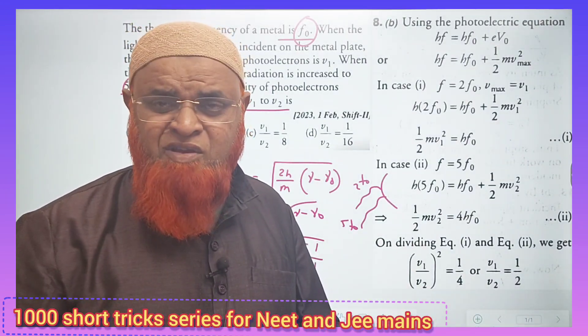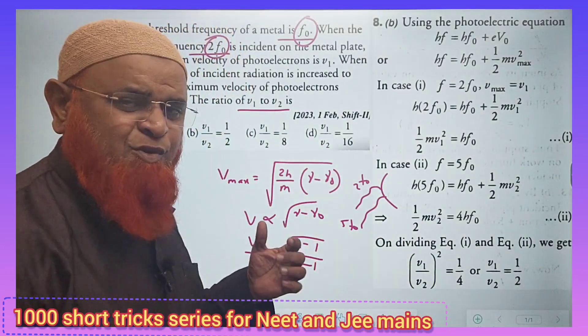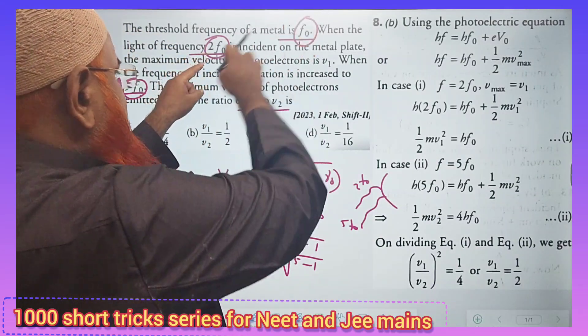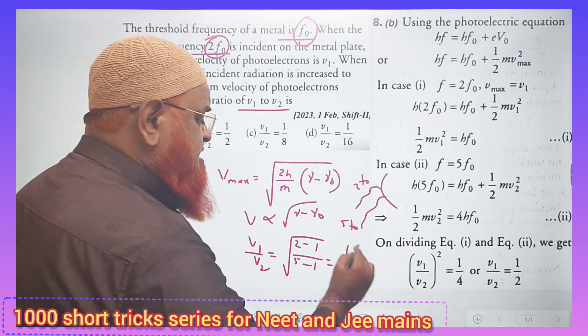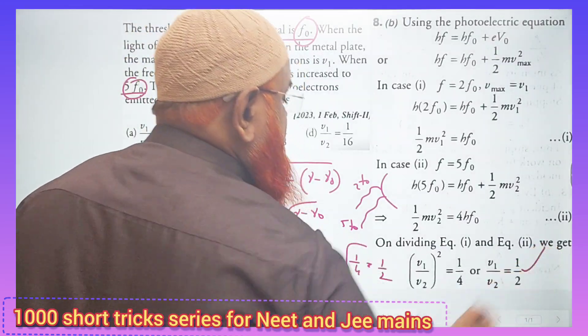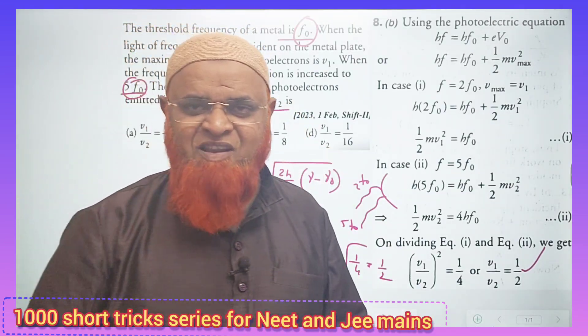Why do you write F0 also? Anyhow, in the numerator and denominator F0 is going to cancel. So can you solve this problem without pen and paper? Just see the problem and write 2 minus F, 5 minus F. Your answer is 1 by 4, that is 1 is to 2. Is it so easy to solve the problem in single step? Enjoy. Thank you very much. Have a nice day.